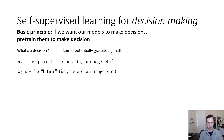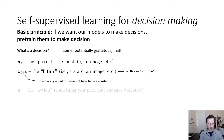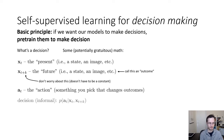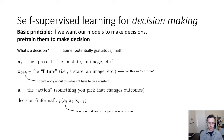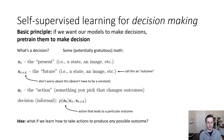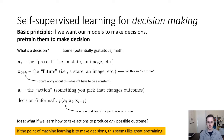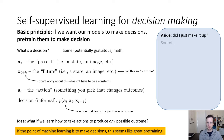We call x_{t+k} an outcome, and we have something we choose — A_t, the action — whatever your model outputs that's going to affect the future. Your decision is a distribution over actions given the present and the future you want to reach. If you can produce actions that lead to a particular desired outcome, you've learned something about choosing actions that lead to outcomes. So here is an idea for a self-supervised learning objective: what if we learn how to make decisions, how to take actions, to produce any possible outcome? If the point of machine learning is to make decisions, this seems like a great pre-training strategy.